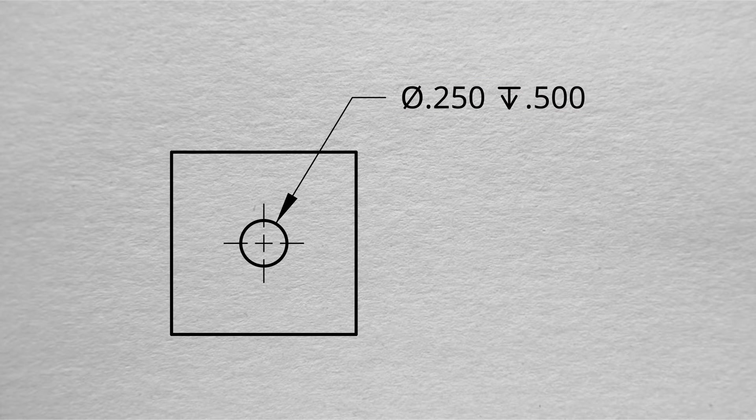Contrast that with a blind hole. It starts off very much the same. We have a diameter symbol, and then we also have the diameter of the circle.